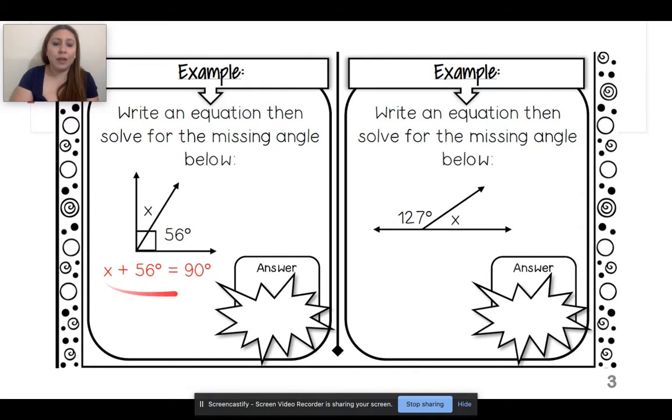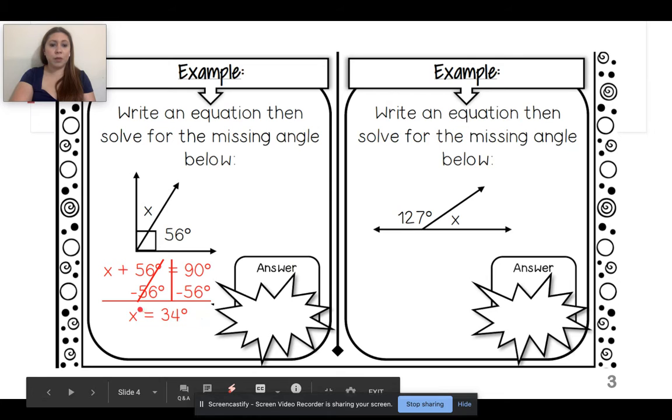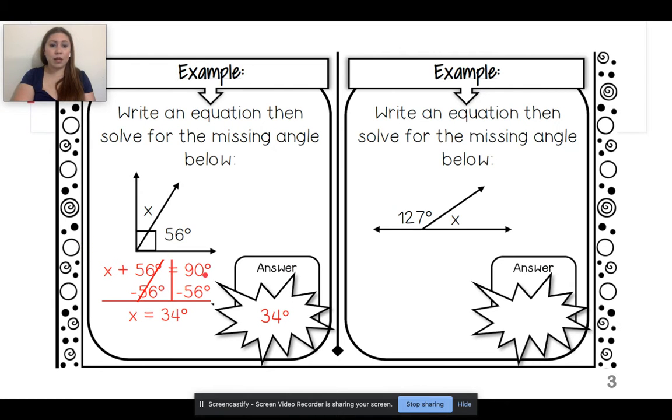That's right, it's 90 degrees. Good job. So if I add the angle I don't know plus the 56, it should give me 90 degrees. So again, this is a one-step equation. So think back to sixth, seventh, eighth grade. I'm going to subtract both sides by 56 degrees. When I do that, my 56 both cross out. I'm left with x. 90 minus 56 gives me 34.